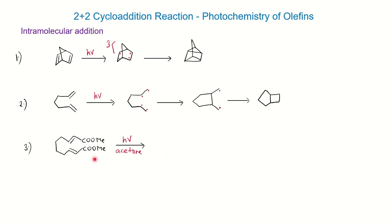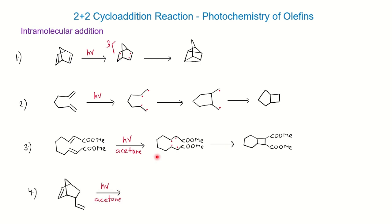The third example is quite similar to the previous one, except there is an electron-withdrawing group. In the presence of photochemical condition and acetone you can show the similar type of mechanism and get a similar product. In the fourth reaction, the molecule again has two isolated double bonds under photochemical conditions. We show radical formation in the triplet state, and from there we show the 2+2 cycloaddition reaction.